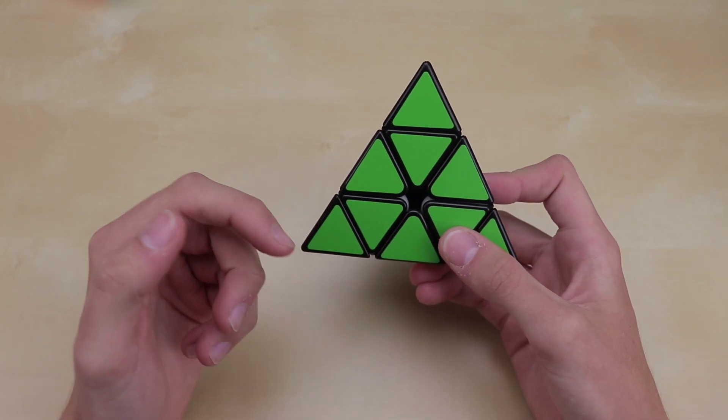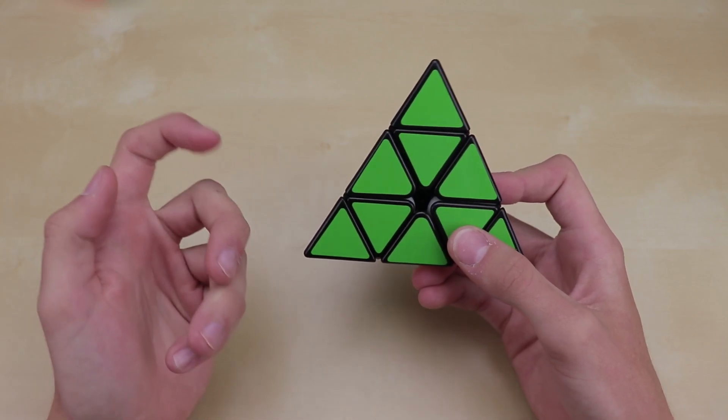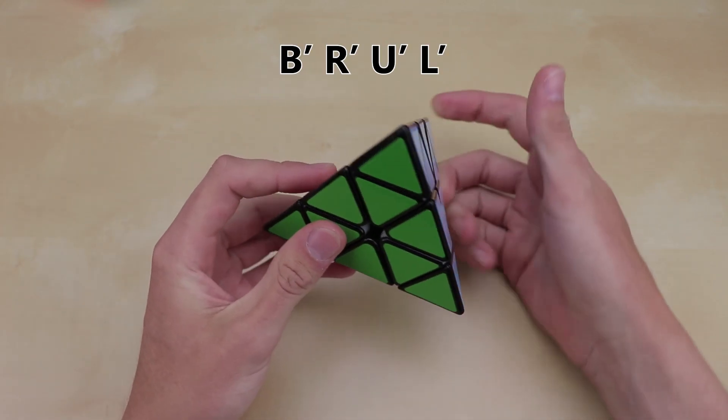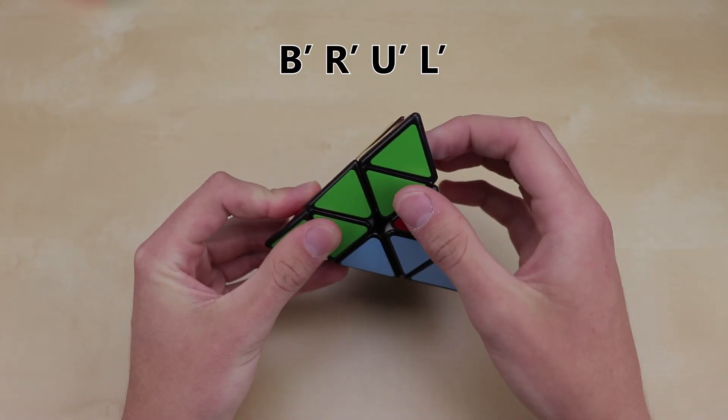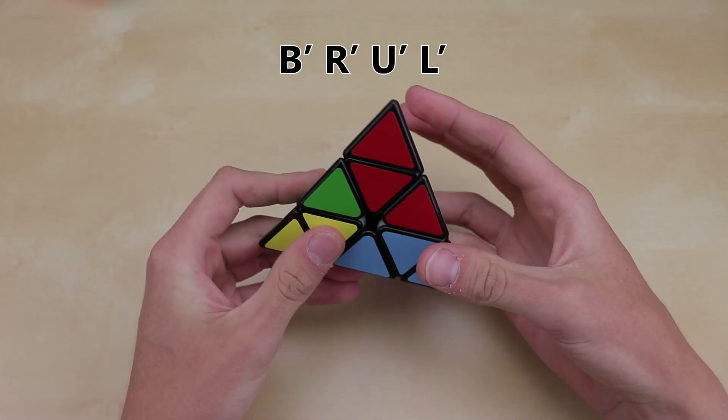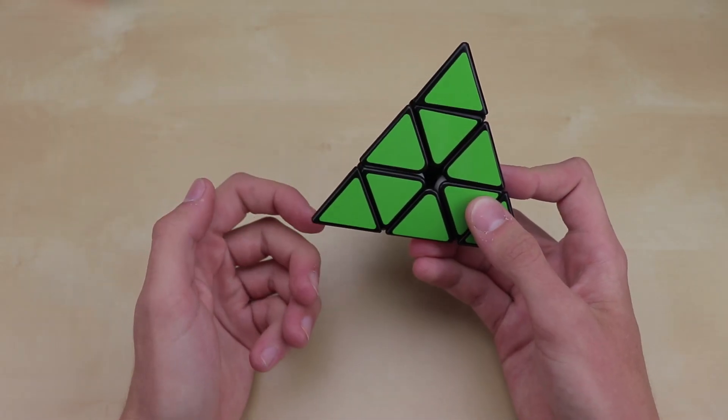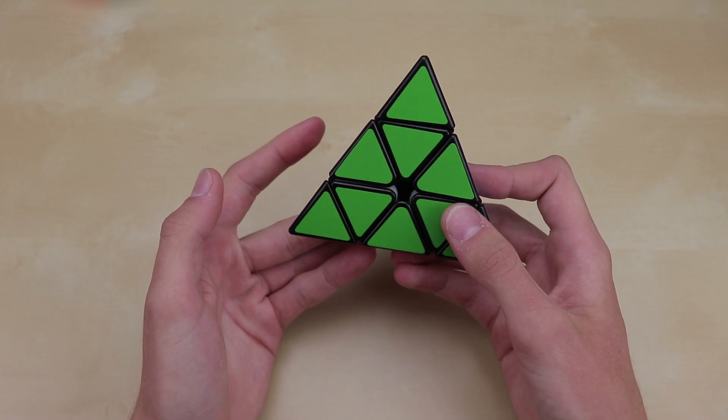Now, of course, if you see a little symbol that looks like an apostrophe after the letter, that means turn it counterclockwise instead of clockwise. So this would be B prime, this would be R prime, this would be U prime, and this would be L prime. Now, of course, you should pretty much already know all that from the 3x3, and that covers all the normal inner layer turns like this.